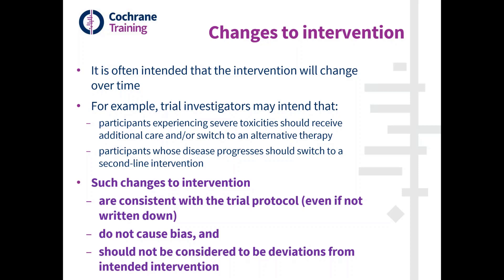A second example is in trials of first-line chemotherapy for a specified cancer: it will generally be intended that participants whose disease progresses should switch to a more aggressive second-line intervention. That is part of the package of care being evaluated. Unless the protocol explicitly mandates that participants remain on their initially assigned intervention regardless of disease progression, it is intended that switching will occur, and that is not bias. Changes consistent with the trial protocol do not cause bias and should not be considered deviations from intended intervention.